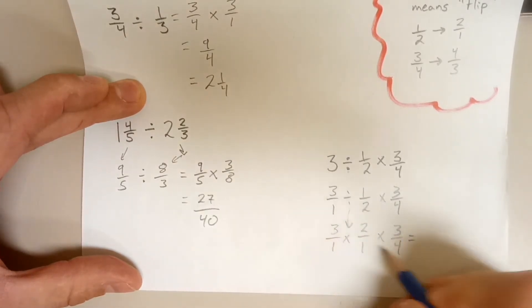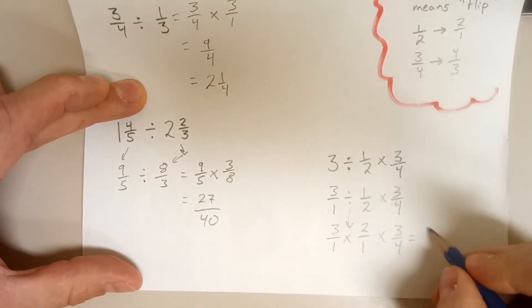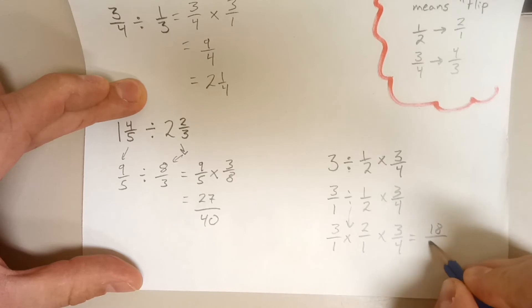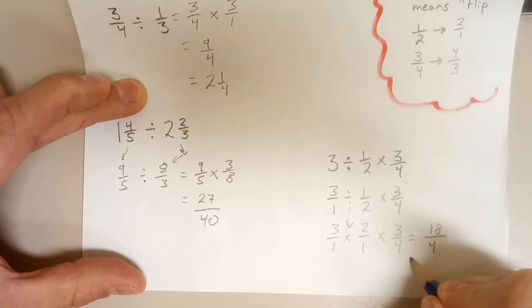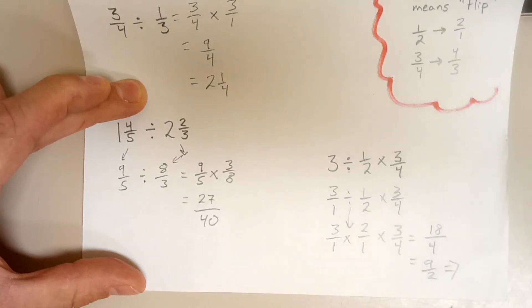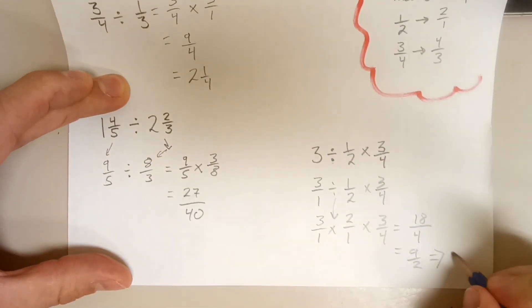Multiply the tops, 3 times 2 is 6, times 3 is 18. Multiply the bottoms, 18 over 4. We could reduce that right away to 9 over 2. And finally, write that as a mixed number, which is 4 and a half.